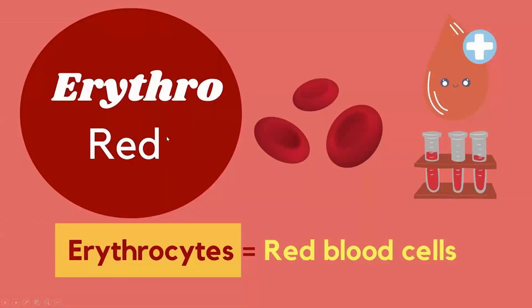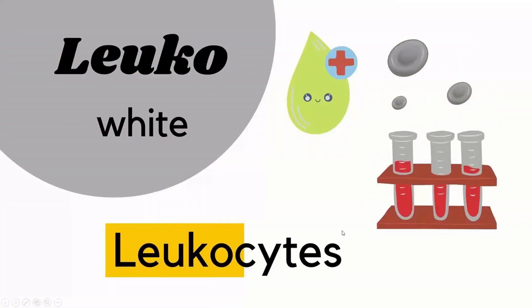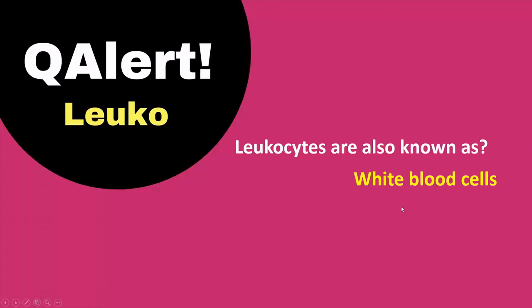Cyano prefix is blue — cyanobacteria. Erythro prefix is red — erythrocytes, red blood cells. Flav means yellow — flavivirus. Leuco means white — leucocytes. Question alert for leuco: leucocytes are also known as white blood cells. Melano means black — melanin.